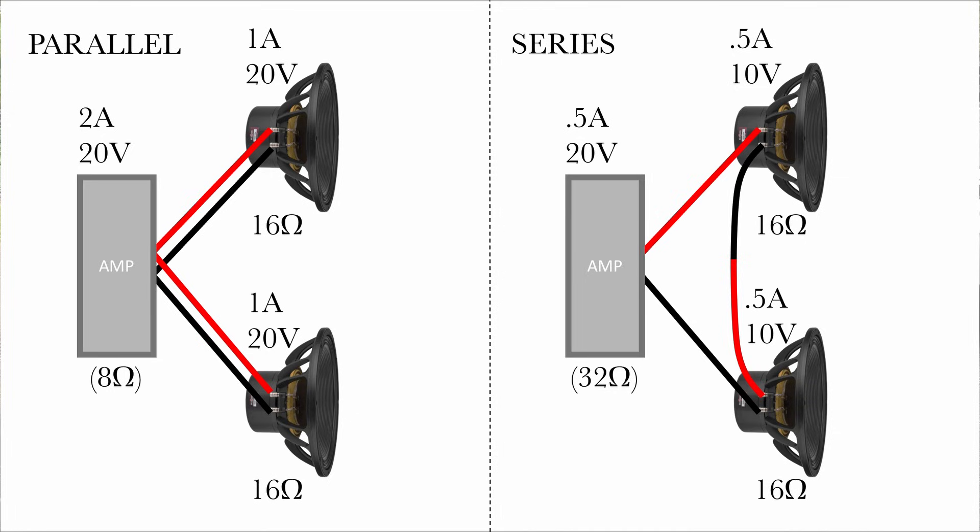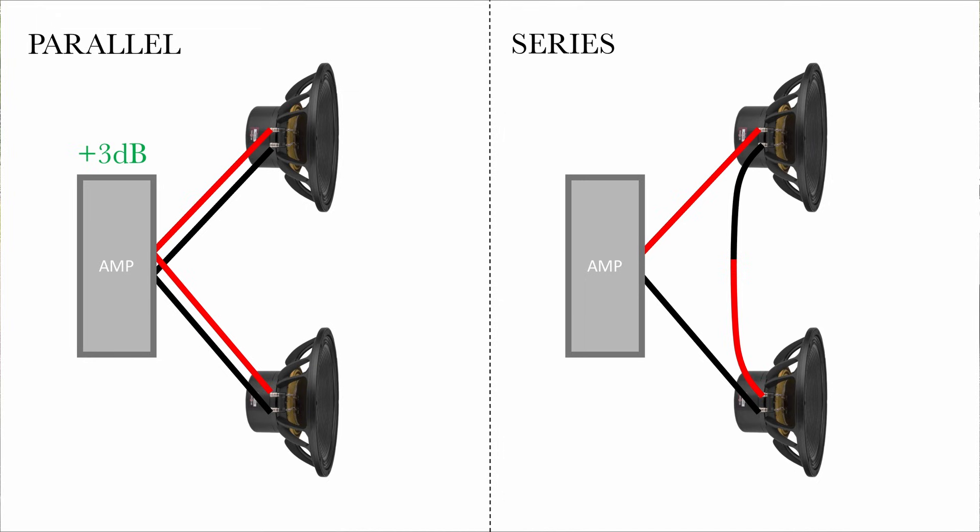With a parallel setup, the 3 dB more power from the amp because of the current increase, plus the 3 dB acoustic power from the extra speaker totals a 6 dB increase in the system. With series, the 3 dB loss from the amp because of the current decrease, plus the 3 dB from the extra speaker totals a 0 dB change in the system. So the number of speakers you can have in a parallel system is limited by the lowering of the ohmage with each additional speaker until you've reached about 2 ohms or whatever the amplifier is comfortable with.